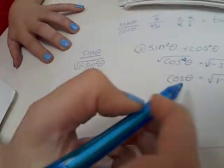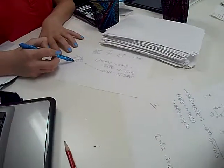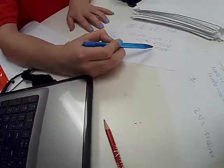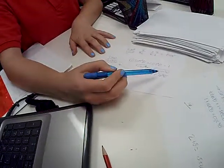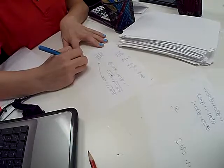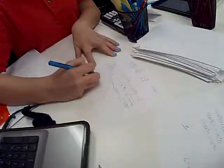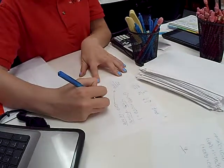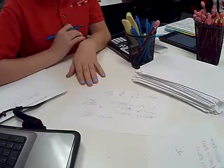So in our problem, this is our original problem. Do you see how we can just plug in cosine theta? Plug in. Right? Because we're saying we solved over here that cosine theta equals 1 minus sine squared theta. So this becomes sine theta over cosine theta, which then just equals tan theta. That's another identity.